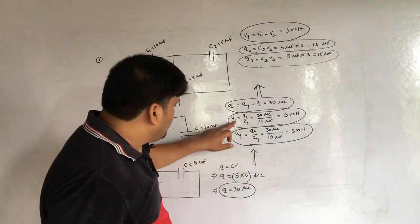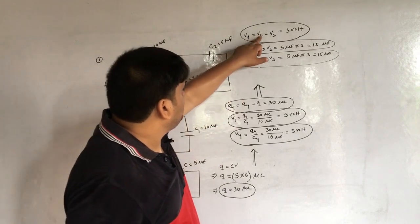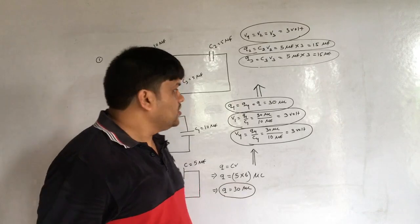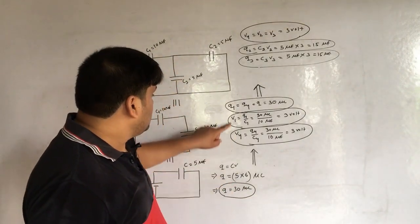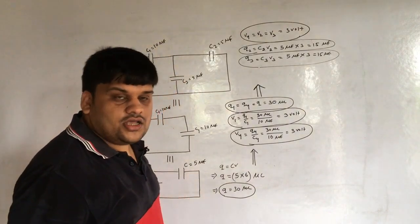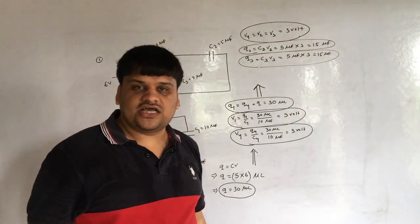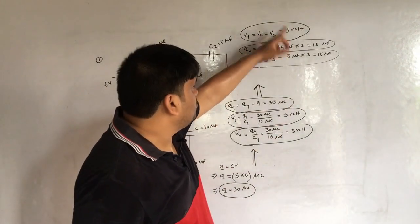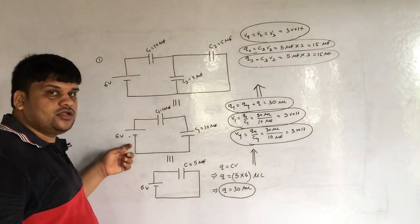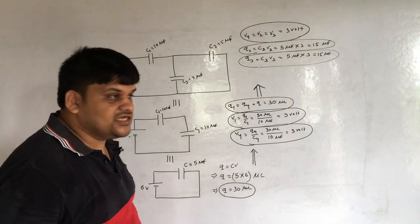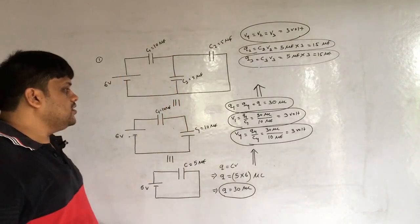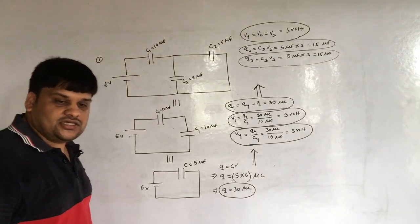Do not make the mistake of adding 3 + 3 + 3 = 9 V when the battery is 6 V — that reasoning is incorrect and was explained in the last class. This question is essentially the same type as solved previously. Now let us come to the next question.